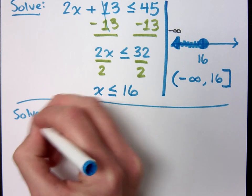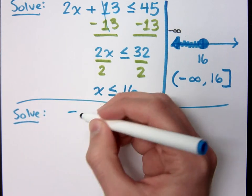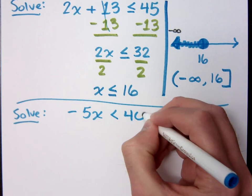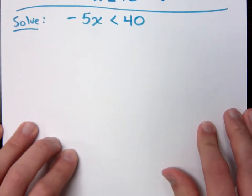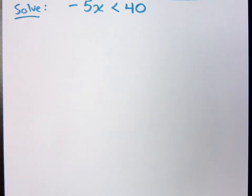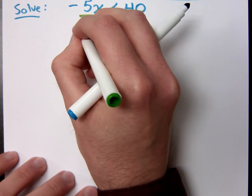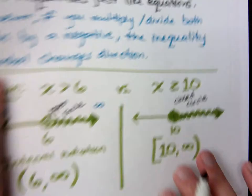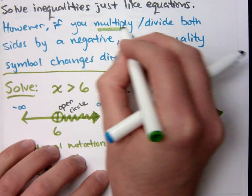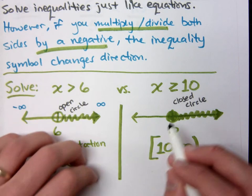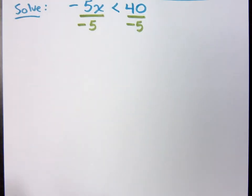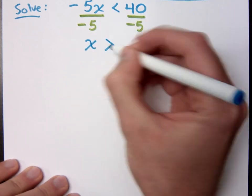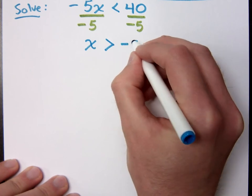For example, if I have negative 5x is less than 40. How would I go about getting x by itself in this problem? Divide both sides by negative 5. If you go back and look at the statement that I just talked to you about, if you multiply or divide by a negative, what's going to happen? The direction flips around. So that means for me that even though I get just a plain positive x over here, what happens? It becomes greater than what? Negative 8.